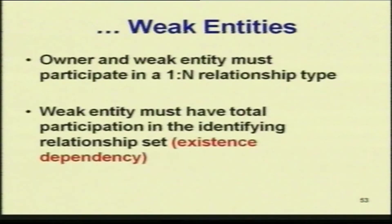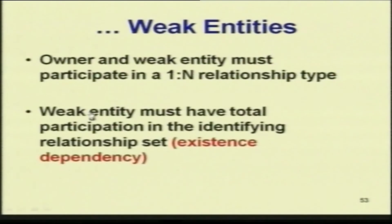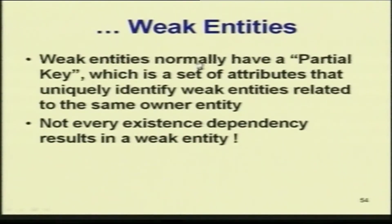To repeat: I have a strong entity and a weak entity — the weak entity depends on the strong entity. The owner and weak entity connected to each other should have a one-to-many relationship, meaning for one value of the strong entity you can have any number of weak entities. All the tuples of the weak entity should also be present in the other one. Weak entities normally have a partial key — a set of attributes that uniquely identify weak entities related to the same owner entity.